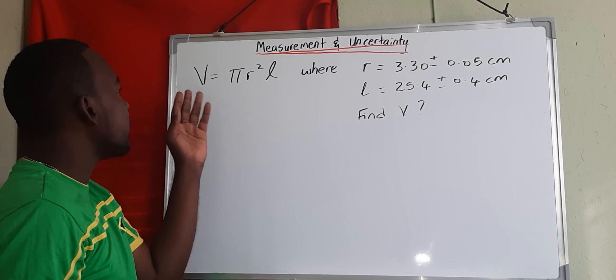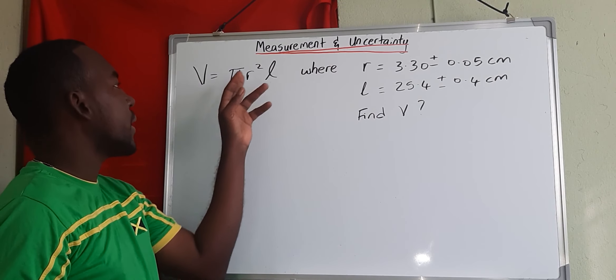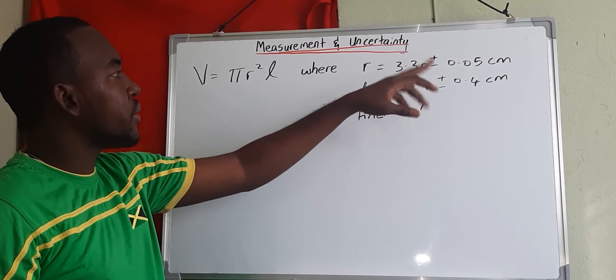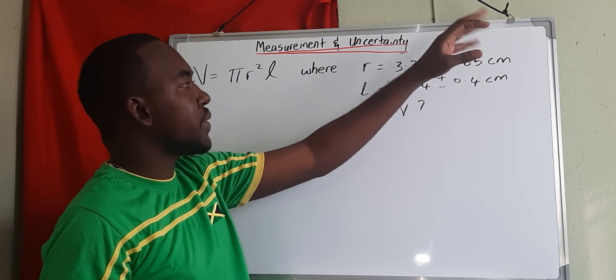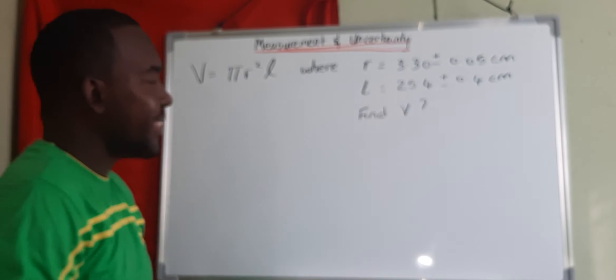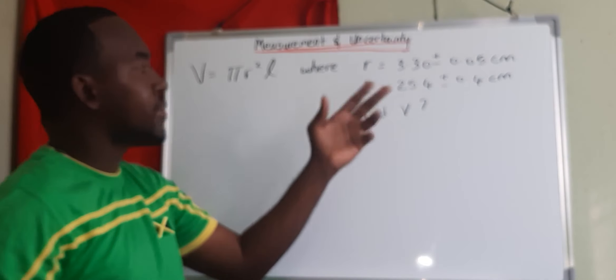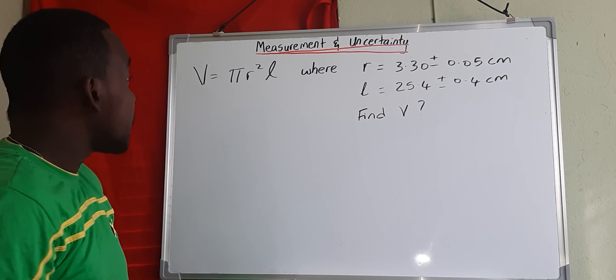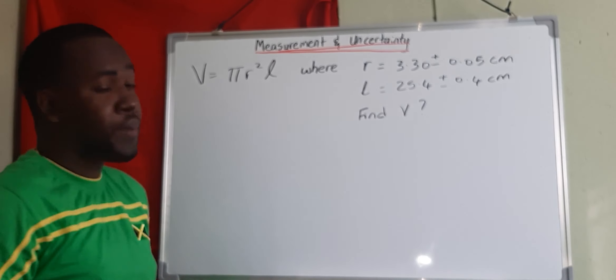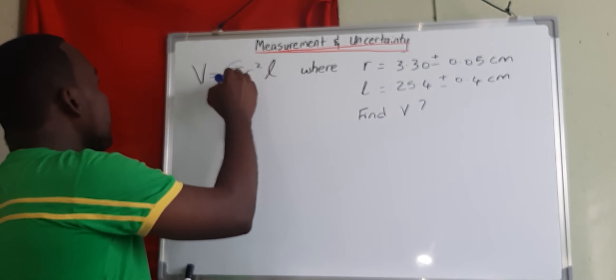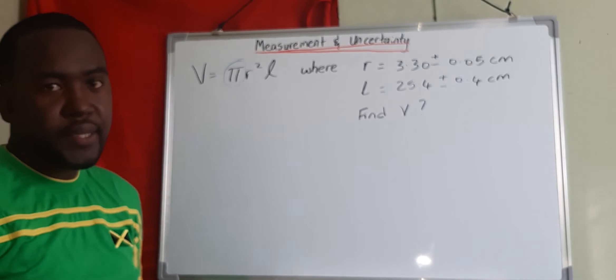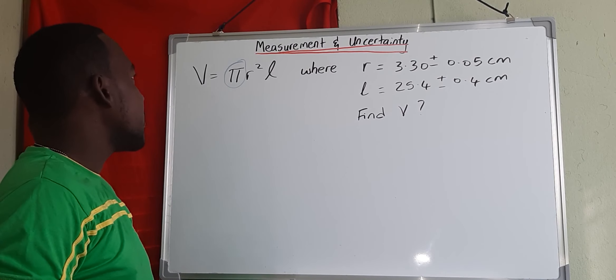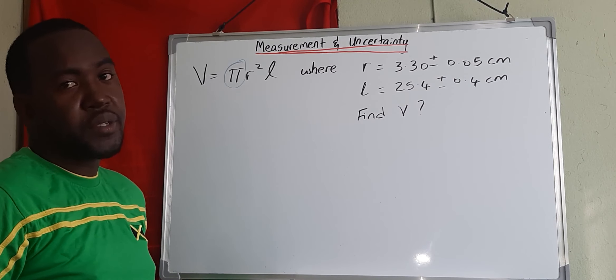For this example, we have volume equals pi r squared times l, where r is 3.30 plus or minus 0.05 centimeters, and l is 25.4 plus or minus 0.4 centimeters. We are asked to find the volume. From this statement, we know that pi here is a constant and it doesn't have any unit, so it's unmeasurable using an instrument, so we're going to ignore it.